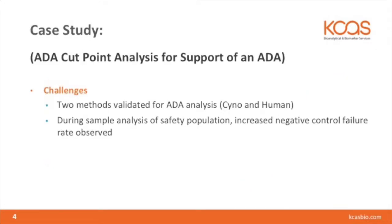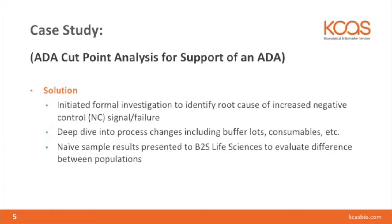I'd like to share with you a case study performed here at KCAS. This was in support of an antibody-drug conjugate. We had two methods that were validated for this ADA — they were in cynomolgus monkey and human matrix. During sample analysis of the human population, we observed an increased control failure. A formal investigation was started, and the root cause of this control failure was identified as an issue with how we set the cut point for the validation, which was using normal donors. Then when we went to do sample analysis, that was in a disease state. The investigation led us to screen a variety of baseline samples from the patients, which was evaluated and determined that indeed the naïve samples in the disease state were different populations.